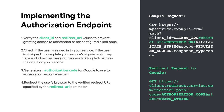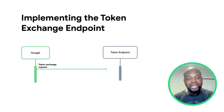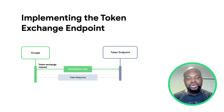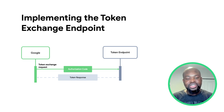The state parameter is a bookkeeping value that is passed back to the client unchanged in the redirect URI. A sample redirect request is shown on the right. Next, we look at implementing the token endpoint. Your service token exchange endpoint is responsible for two kinds of token exchanges: exchanging authorization codes for access tokens and refresh tokens, and exchanging refresh tokens for access tokens.